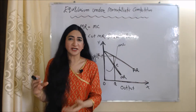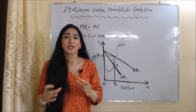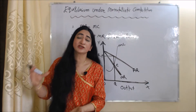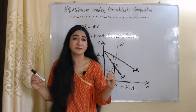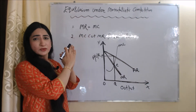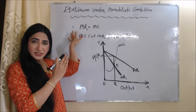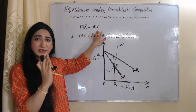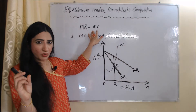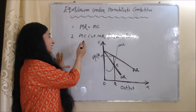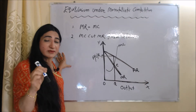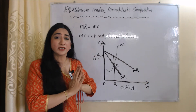Now we are going to talk about equilibrium under monopolistic competition. In order to get equilibrium in all markets, two conditions must be satisfied. The first condition is MR equal to MC — that is, marginal revenue equal to marginal cost. The second condition is that MC cuts MR from below, meaning the marginal cost curve cuts the marginal revenue curve from below.